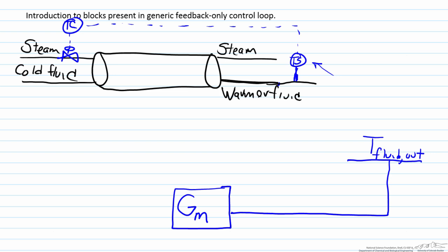What is coming into this block would be the actual fluid temperature. But what the sensor transmitter is going to do is two things. The sensor, the first part, is going to sense the temperature. So let's assume that this fluid was fifty degrees Celsius.